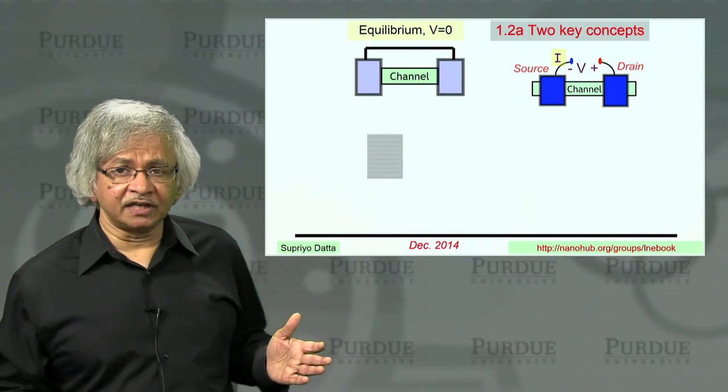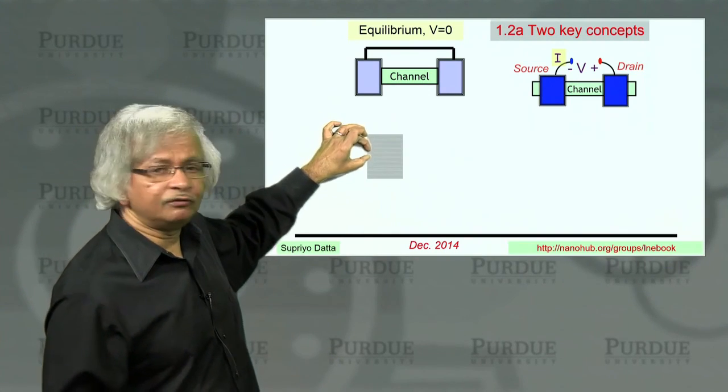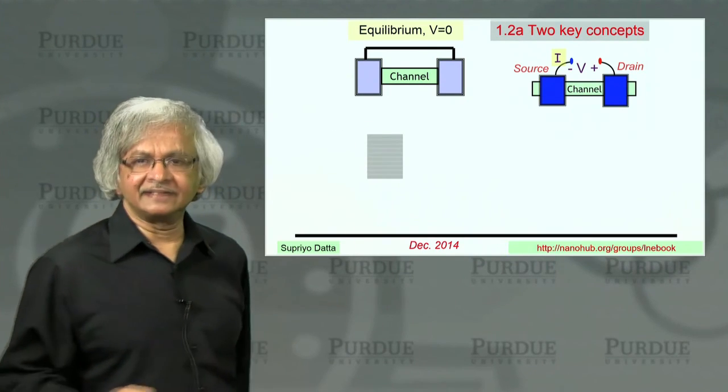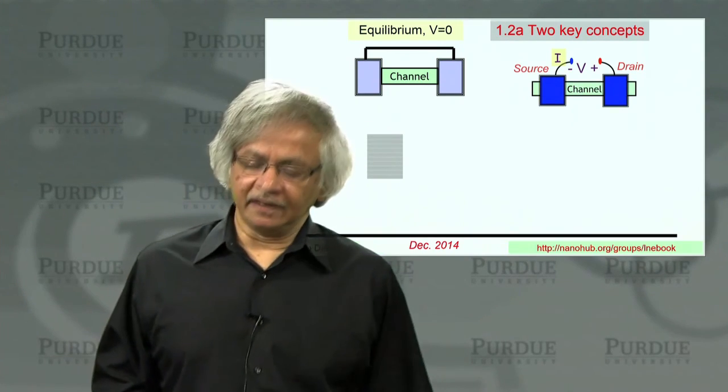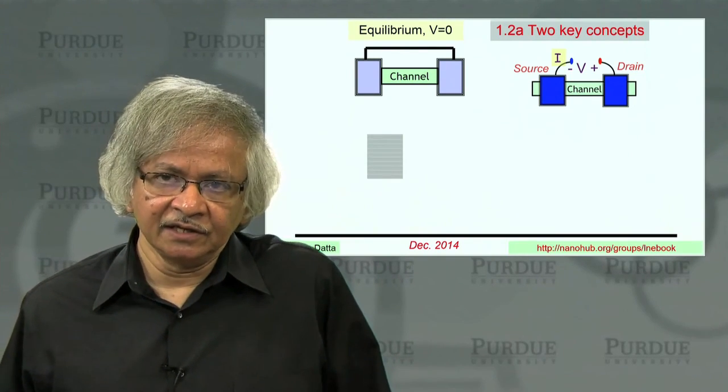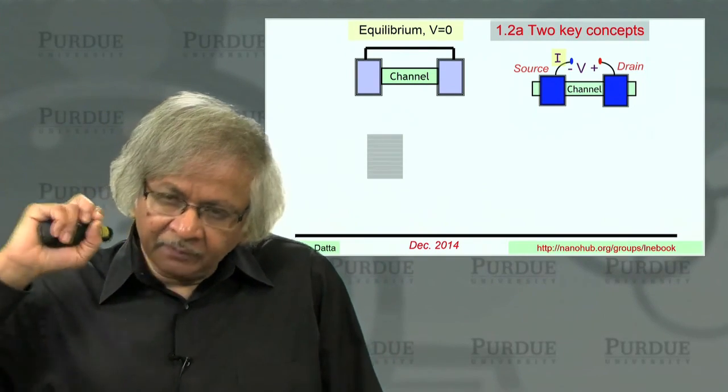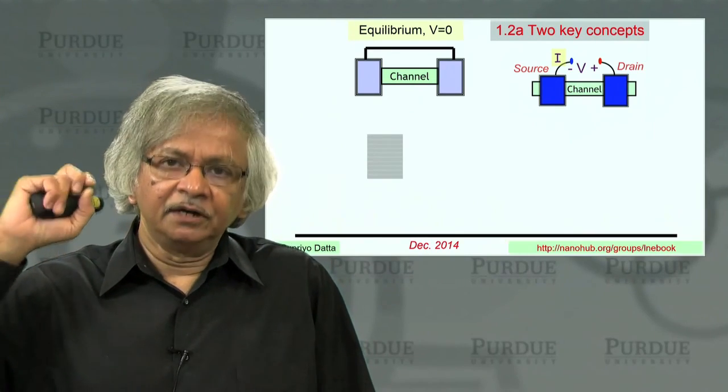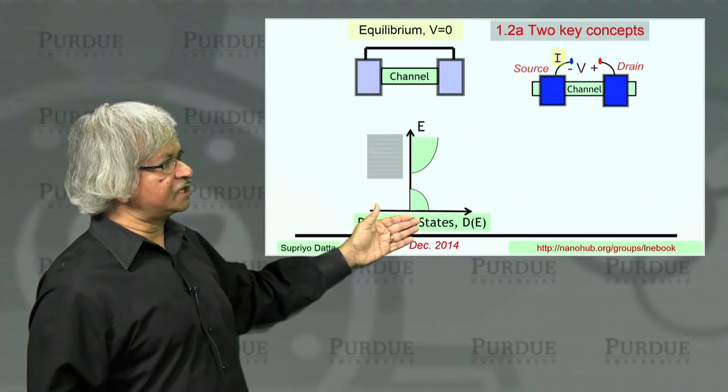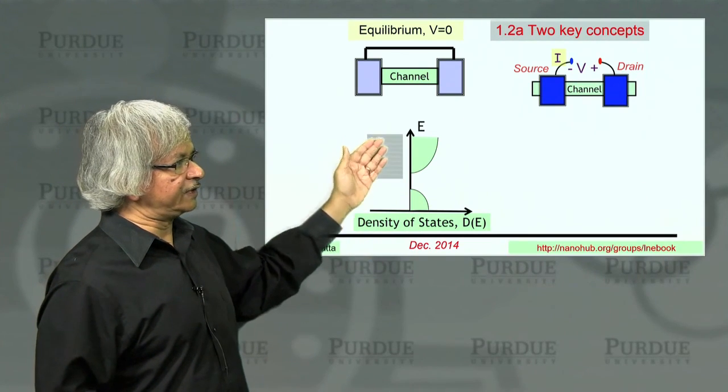And when you get to a solid, usually these levels are awfully close together. And rather than draw lots of lines like this, it's more convenient to define something called the density of states, which tells you how many states you have per unit energy.